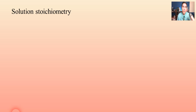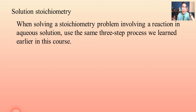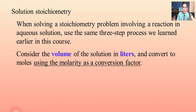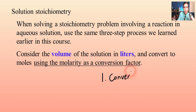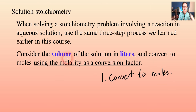In this one we're actually going to look at some mathematics and apply some of the same stoichiometry methods that we learned earlier in this course to solutions. We're going to use the very same three-step process that we learned earlier in order to solve stoichiometry problems. The first step is to convert to moles, but instead of converting to moles using the molar mass, we're going to use the molarity as a conversion factor.